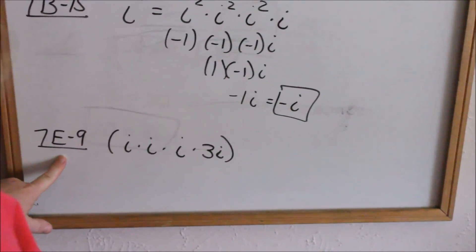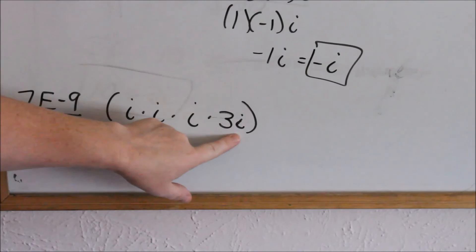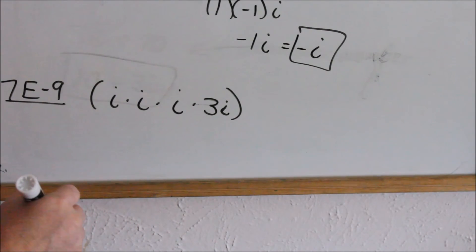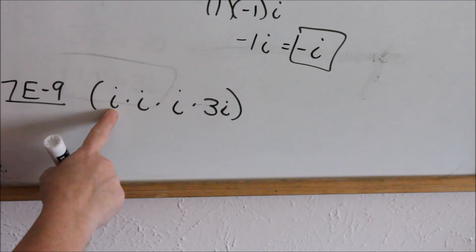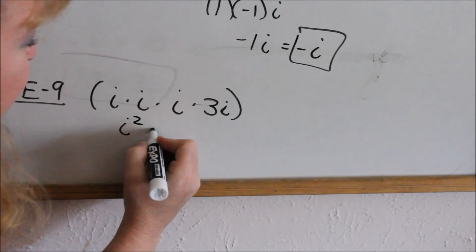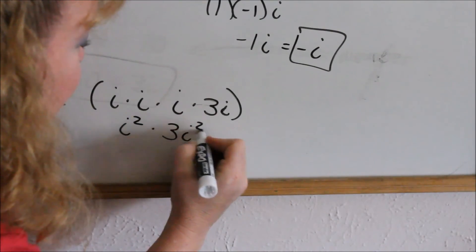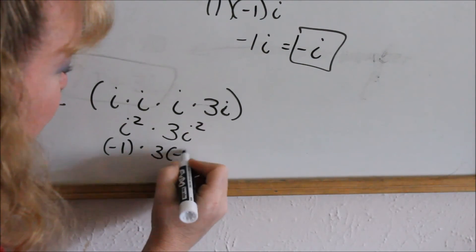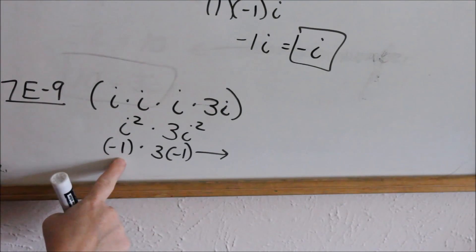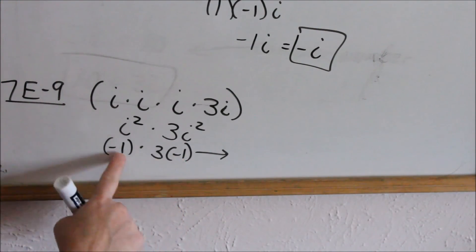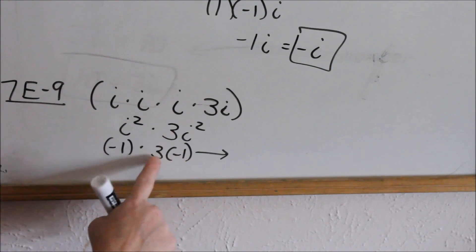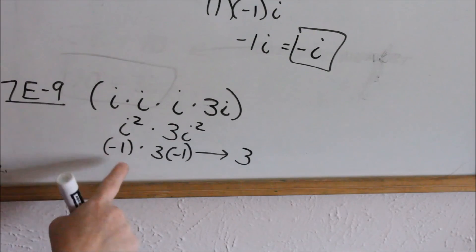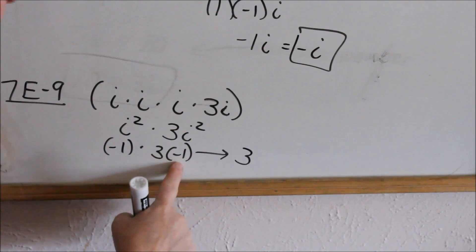Now go to 7E9: i times i times i times 3i. There's a coefficient of 1 in front of each. Since i squared equals negative 1, group these into i squares: i times i is i squared, and i times 3i is 3i squared. Replace i squared with negative 1: that gives negative 1 times 3 times negative 1. Negative 1 times negative 1 is positive 1, and positive 1 times 3 is just 3.